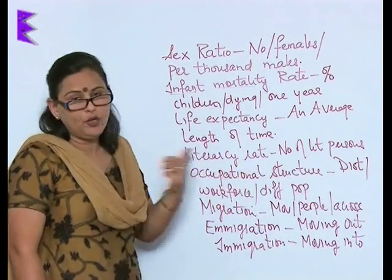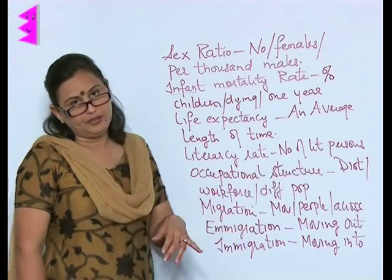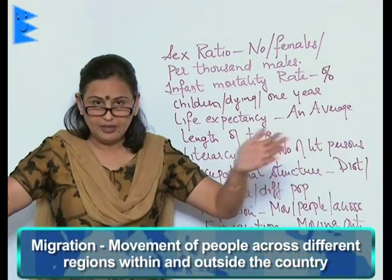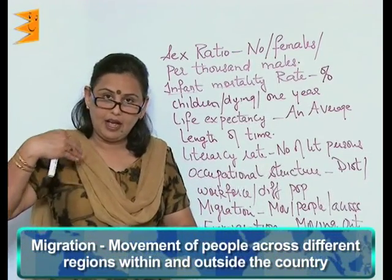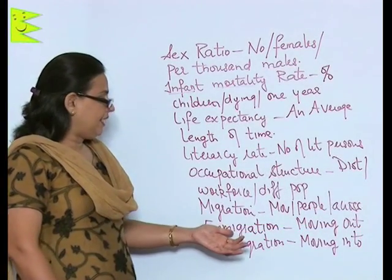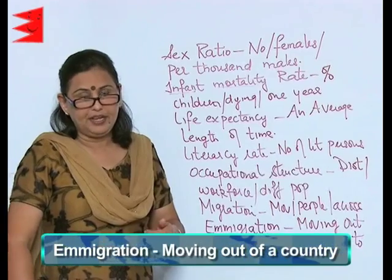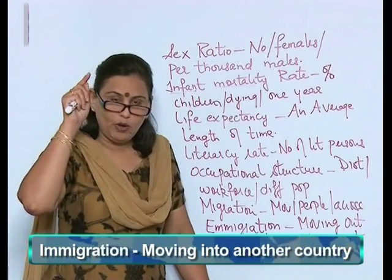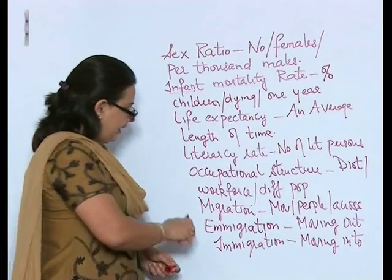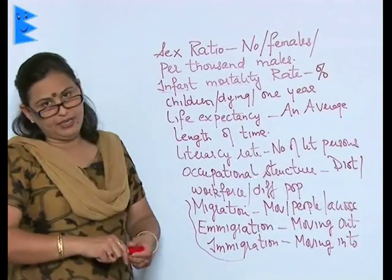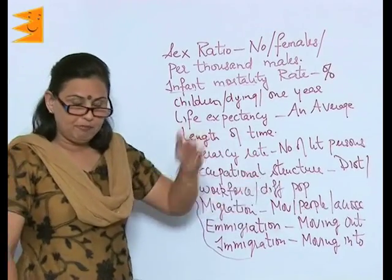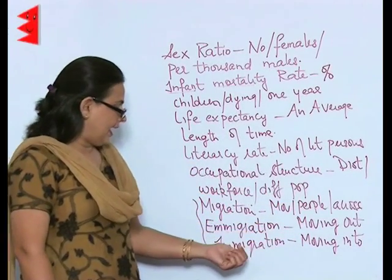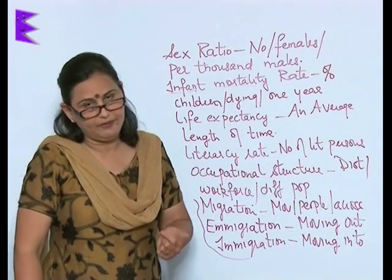Migration is the movement of people across different regions, within the country and outside the country. Emigration means moving out of the country, while immigration means moving into another country. So remember these three terms: migration is the general movement of people within and outside a country; emigration is moving out of a country; and immigration is moving into another country.